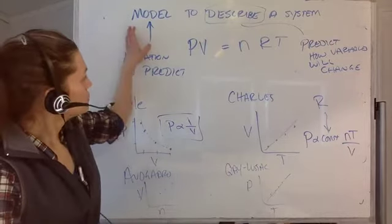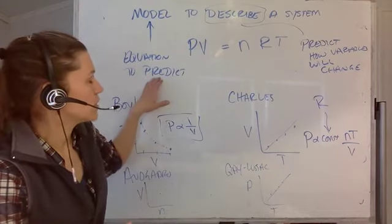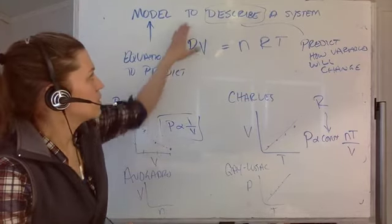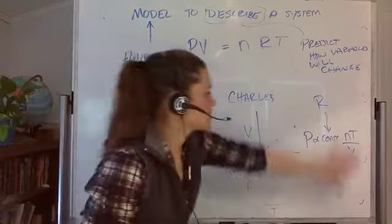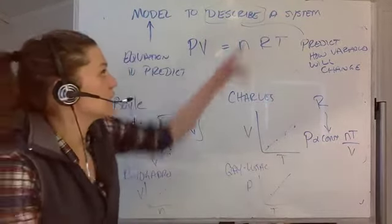So we have a model, an equation to predict things, or to explain observation, to describe. And so we describe it via pressures, volumes, temperatures, number of moles, a system.